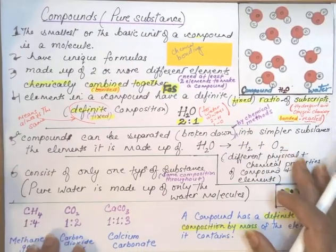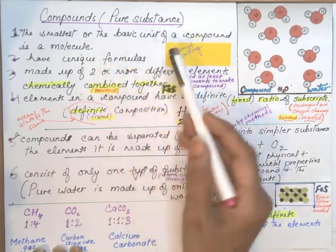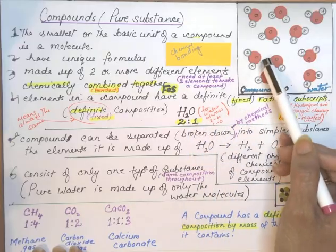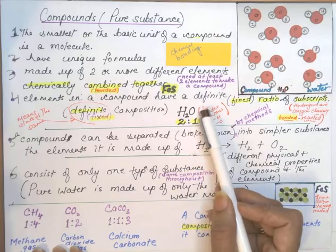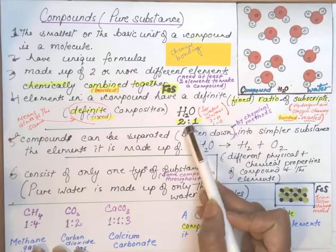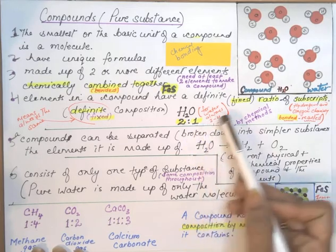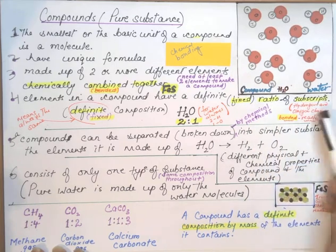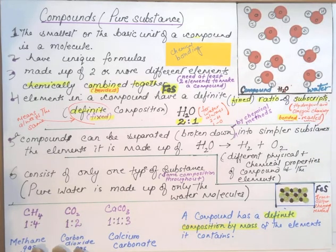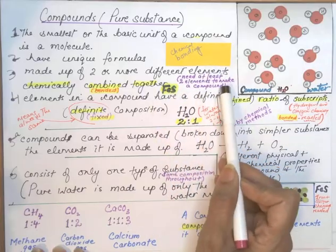The second type of pure substance is a compound. The smallest or basic unit of a compound is a molecule, and compounds have unique formulas. For example, water is H2O: two hydrogen atoms and one oxygen atom. No matter where you take that sample, the ratio of hydrogen to oxygen atoms is always 2:1 — that's a fixed mathematical relationship using subscripts. Hydrogen and oxygen are chemically bonded, forming a water molecule. Compounds are made up of two or more different elements, so a minimum of two elements is needed to make a compound.